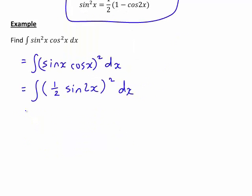One obvious simplification we could do from here is a half squared is a quarter, and a quarter being a constant, we could just take that outside of the integral sign. And I'm just going to write sine 2x, all squared, in the more usual form, sine squared 2x. That makes it a bit simpler to see what we're looking at here.